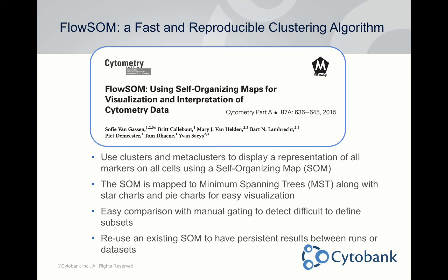Another big benefit is that FlowSOM is very fast — much faster than SPADE. It also allows you to cluster and then meta-cluster. You can take similar cells, put them into clusters, and then similar clusters into meta-clusters. This mirrors biology much better. Instead of just breaking data into 200 clusters, you can have 200 clusters and then 10, 15, or however many meta-clusters, more accurately breaking apart the data into subpopulations similar to what a person would get.